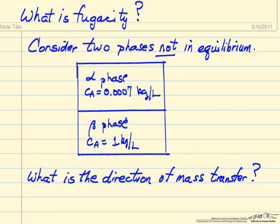We'll start out by looking at two phases, an alpha phase and a beta phase. We won't specify any more about the phases right now, but what we're showing is the concentration of component A in each of the phases.